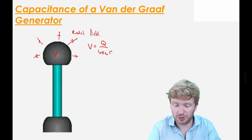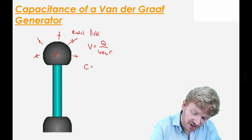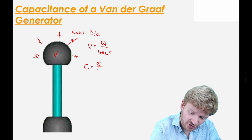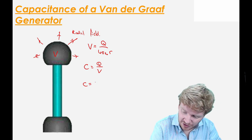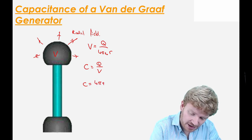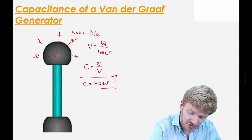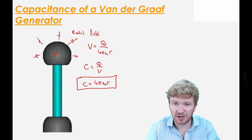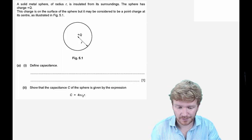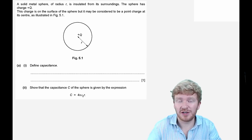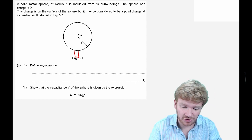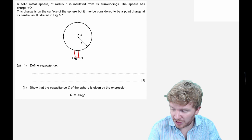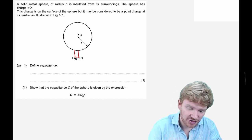You can look back on the last video if you're unsure about how we got there. Using the standard result that capacitance is charge divided by voltage, it's pretty obvious that the capacitance of my Van de Graaff generator is 4πε₀r. This is a standard result worth knowing, and you need to be able to derive it. Here's a part exam question about a solid metal sphere of radius r, insulated from its surroundings — in other words, a Van de Graaff generator — where the charge on the surface may be considered as a point charge at its centre, giving a radial field.